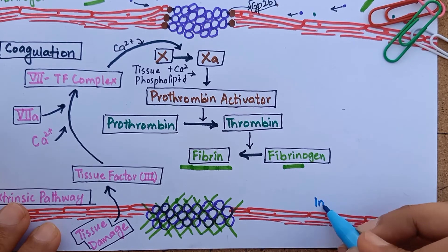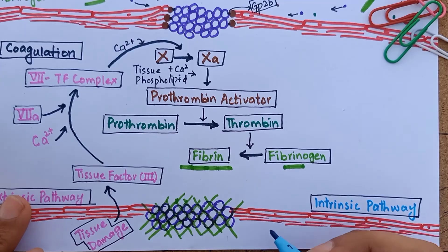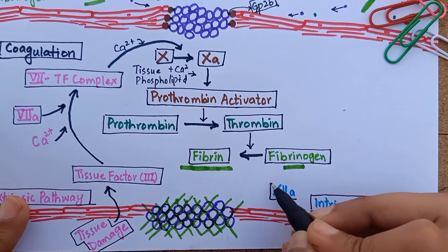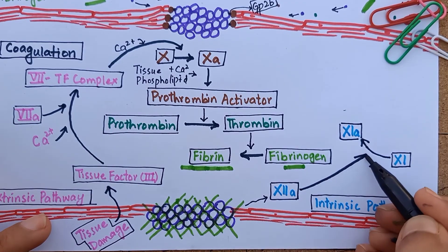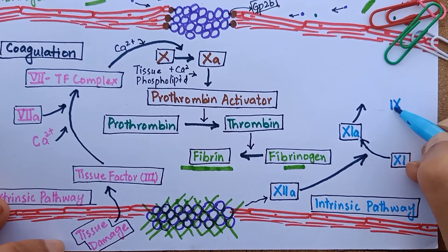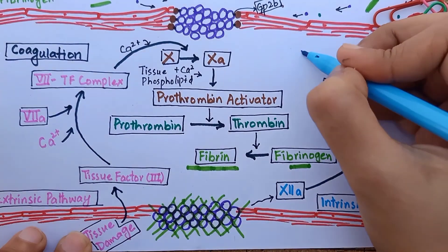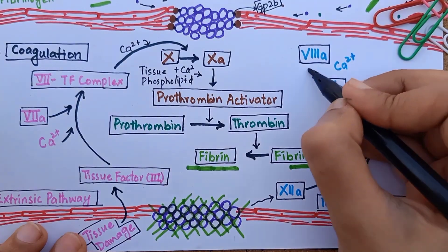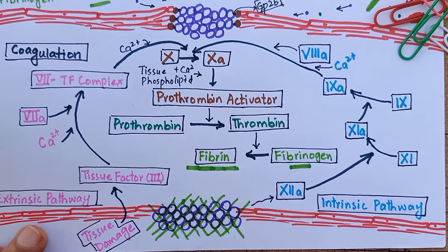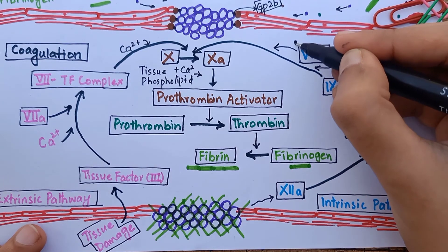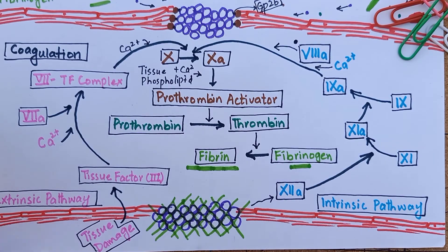The second mechanism is the intrinsic pathway. It begins when the traumatized blood vessel activates factor 12. Activated factor 12 acts enzymatically on factor 11 and activates it. Activated factor 11 acts on factor 9 and activates it as well. Activated factor 9, along with activated factor 8 in the presence of calcium, acts on factor 10 to form activated factor 10. This step will be deficient if factor 8 is in short supply — deficiency of factor 8 is the main cause of classic hemophilia, which is why factor 8 is also called anti-hemophilic factor. This pathway is called intrinsic because the entire cascade of clotting factors is intrinsic to blood.